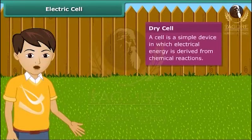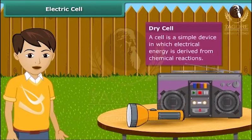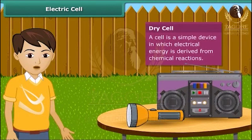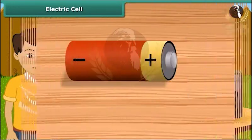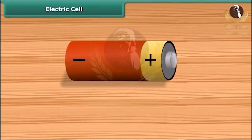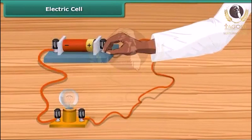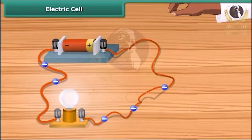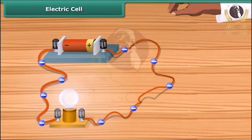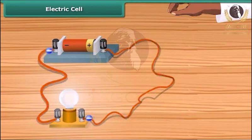A dry cell battery used in a torch or transistor radio is a source of electric current. Every battery has two terminals marked plus and minus. When a metallic wire connects these two terminals, the electrons resulting from chemical reaction start flowing through the wire constituting an electric current. These electrons flow from the negative to positive terminal.